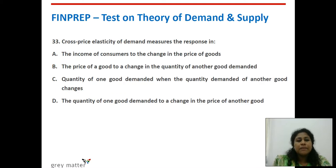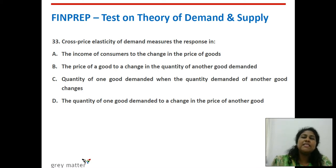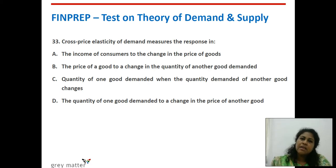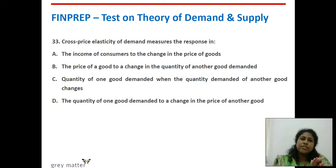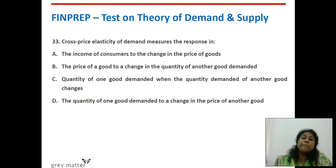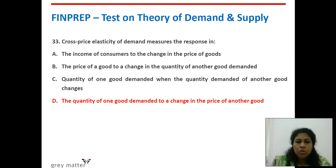Thirty-third question: cross price elasticity of demand measures the response in what? Price changes of one commodity influence the quantity demanded of a related commodity — a substitute or complementary good. We consider the price change of one commodity and its influence on quantity changes of another related commodity. The right answer is option D — the quantity of one good demanded in response to a change in the price of another good.